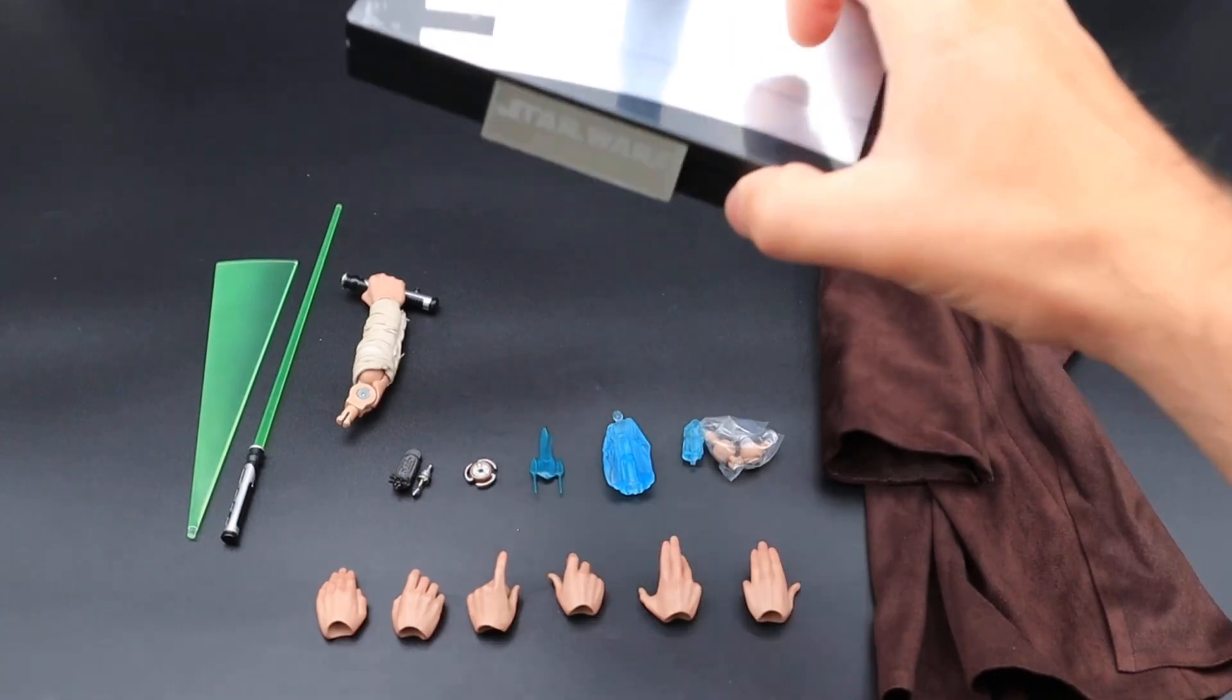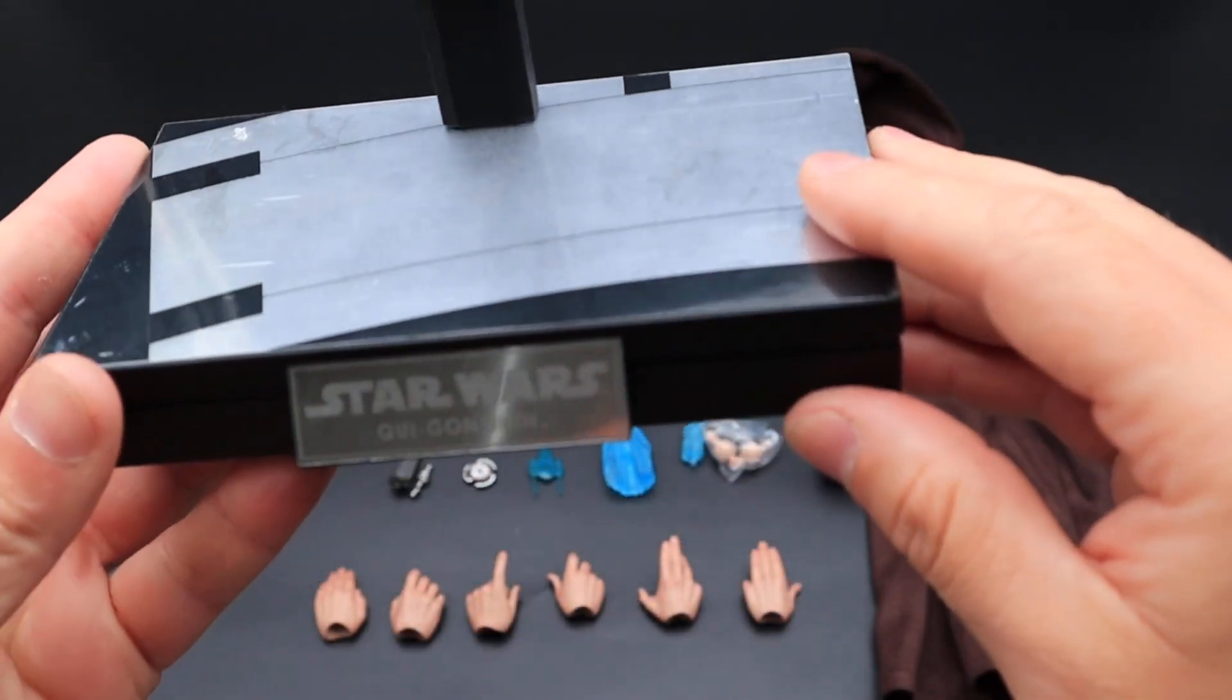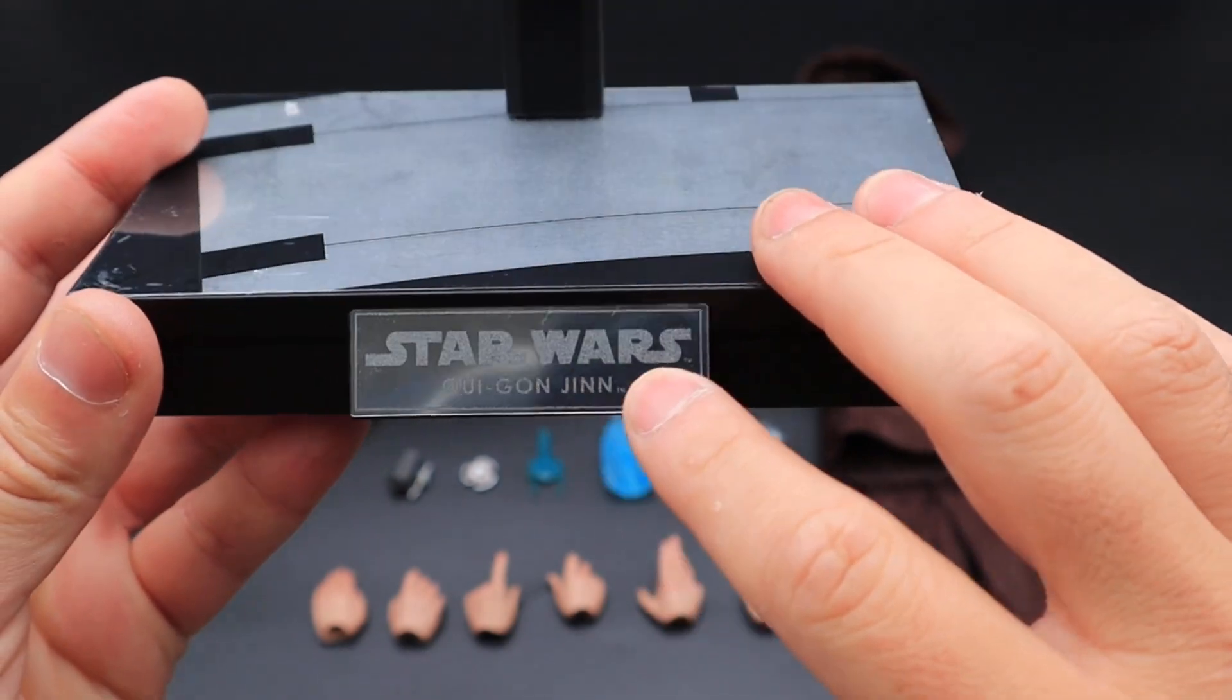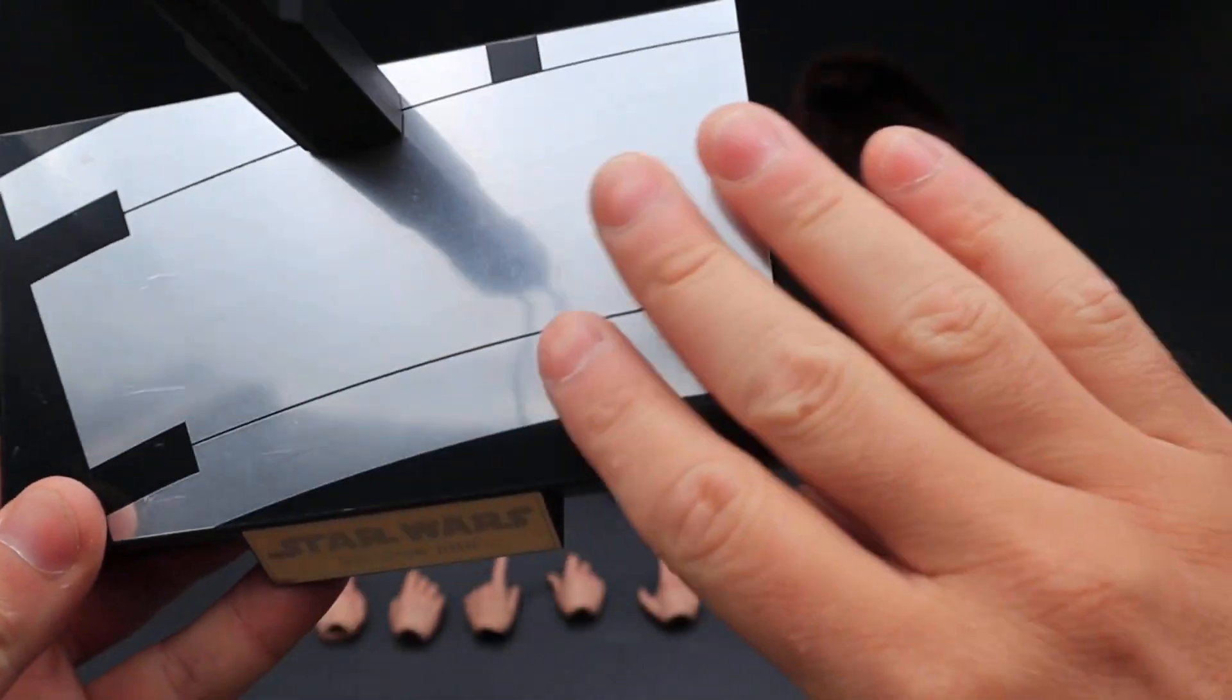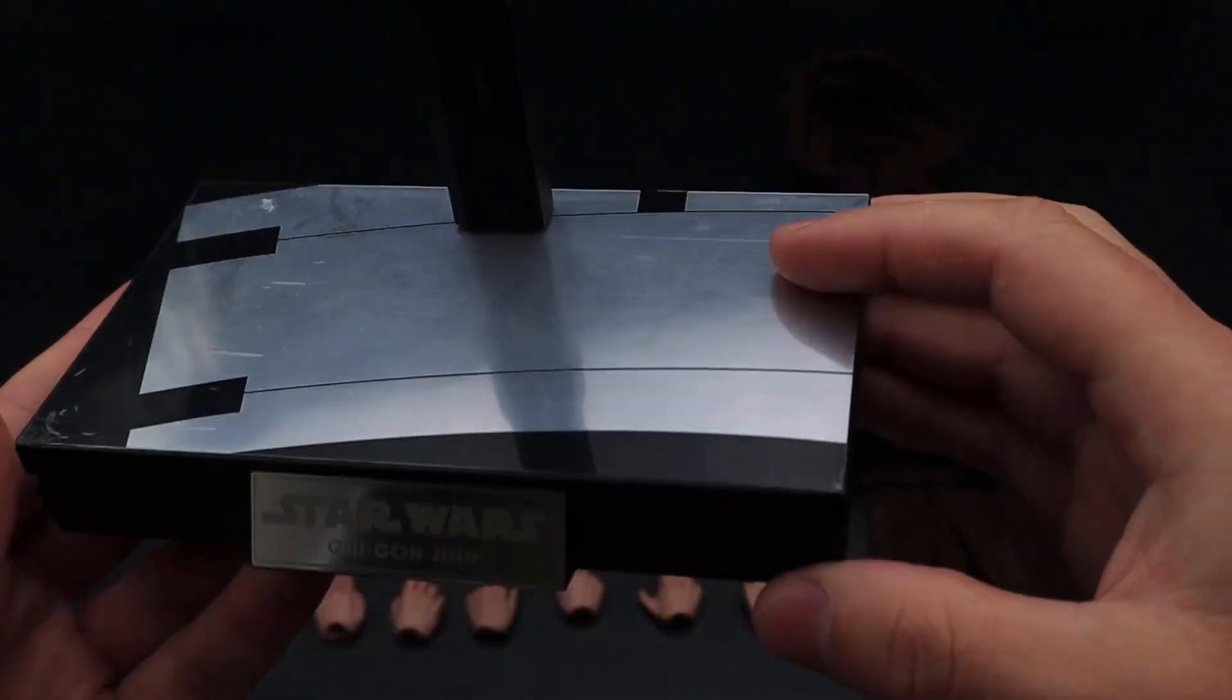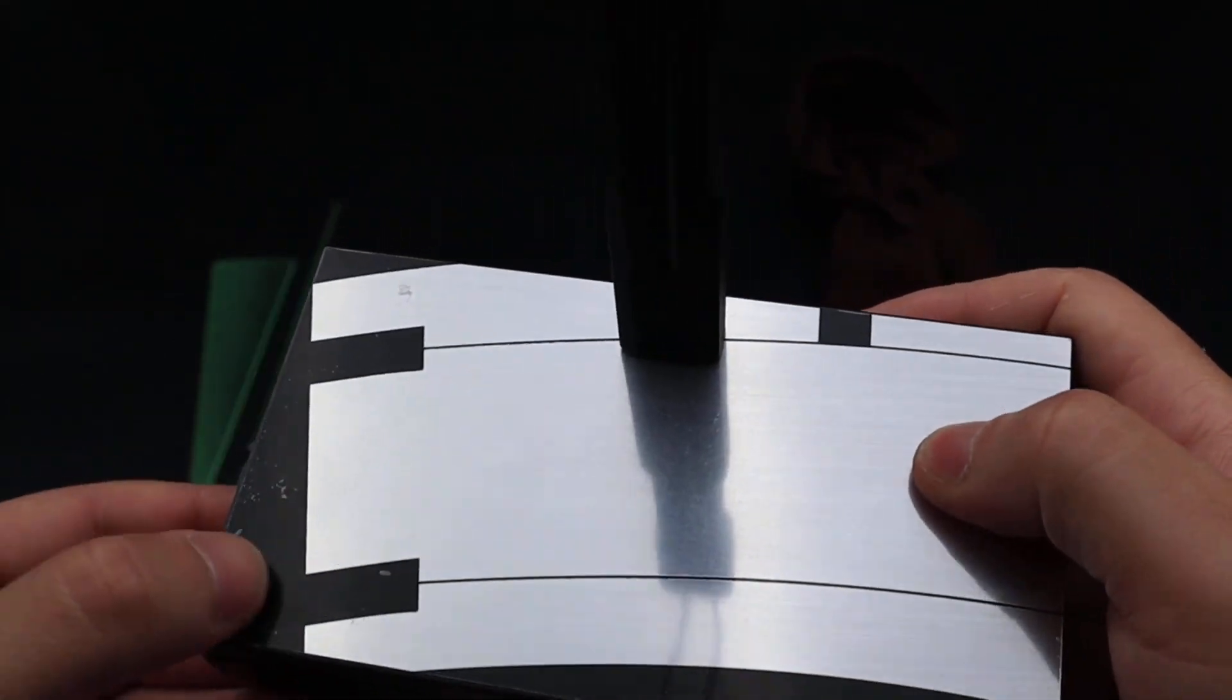You get the stand - pretty basic stand. It's got a little plaque there that says Star Wars Qui-Gon Jinn, and then there's a nice silver finish on the top. I've still got the plastic on mine as you can see there. Yeah, pretty basic stand.